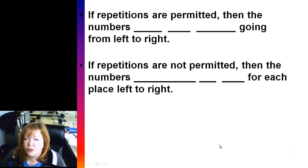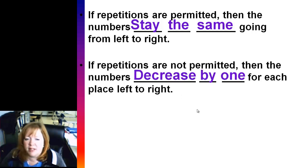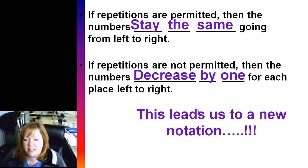If repetitions are permitted, then the numbers you notice on that first one stay the same, going left to right. If they're not permitted, they decrease by one for each place left to right, and that leads us to our new notation with the exclamation point.